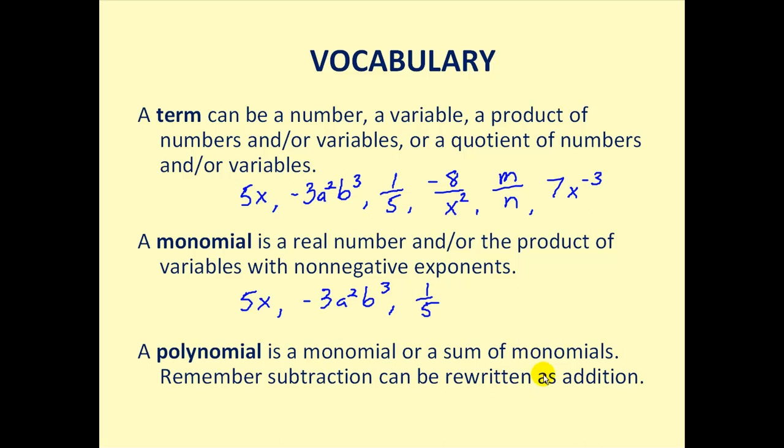A polynomial is a monomial or a sum of monomials. Remember that subtraction can be written as addition. So it may show up as a subtraction of monomials. For example, 5x + 3 is a polynomial. Negative x³ + 5y² - 8 is also a polynomial.